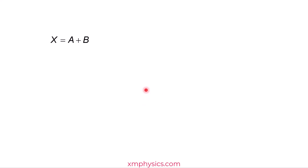Well, it depends on the specific calculation. So if you are doing X equals A plus B, then delta X is delta A plus delta B. This is quite intuitive, though I do have to explain this.